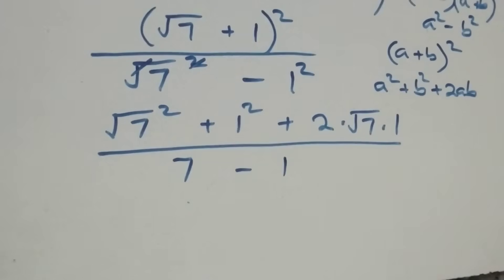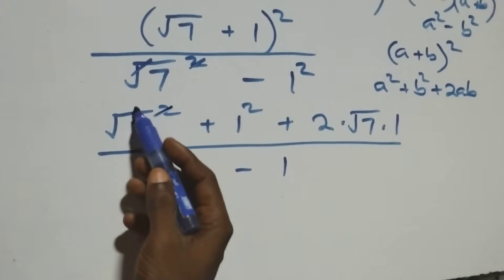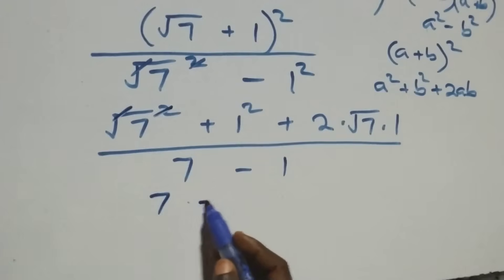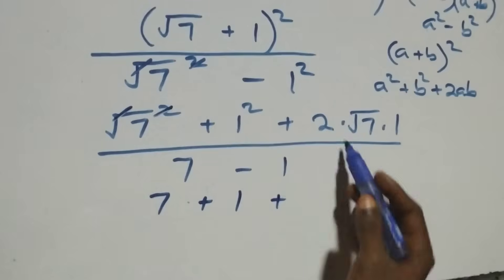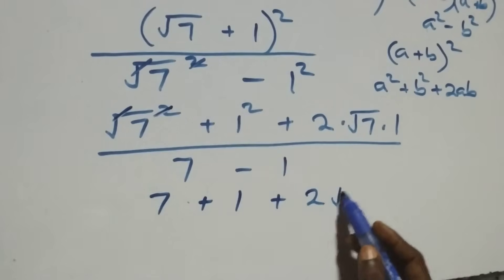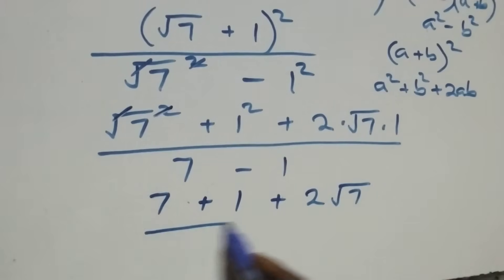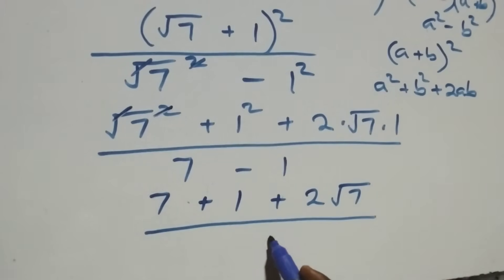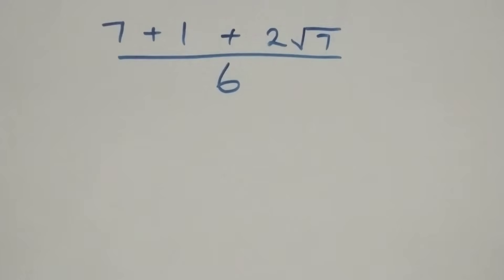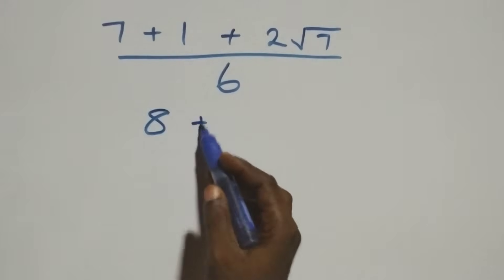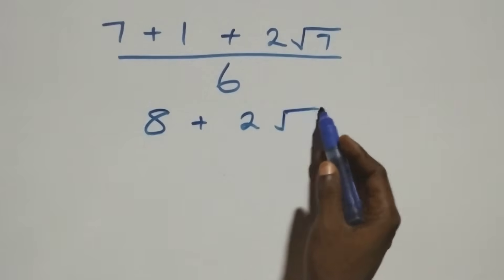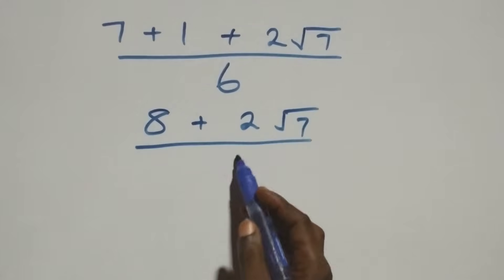So the numerator becomes: square cancels square root giving 7, plus 1 squared which is 1, plus 2√7. The denominator is 7 minus 1, which equals 6. This gives us 7 plus 1, that's 8, then plus 2√7, all over 6.